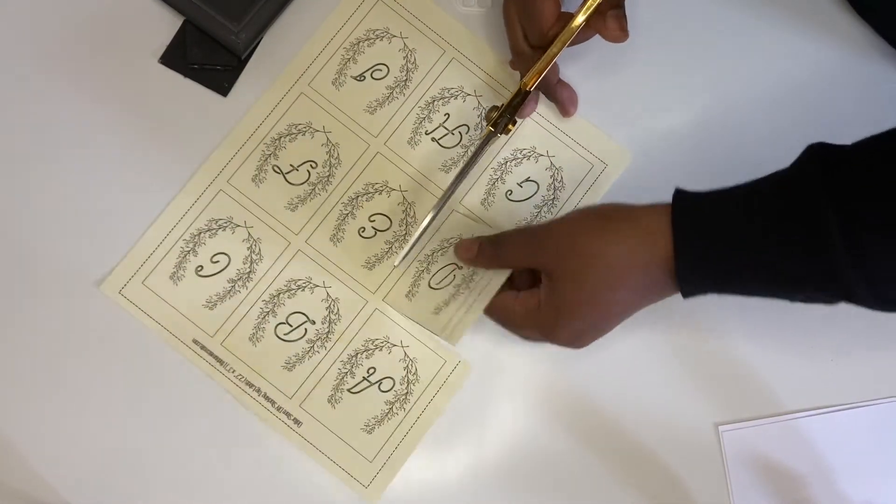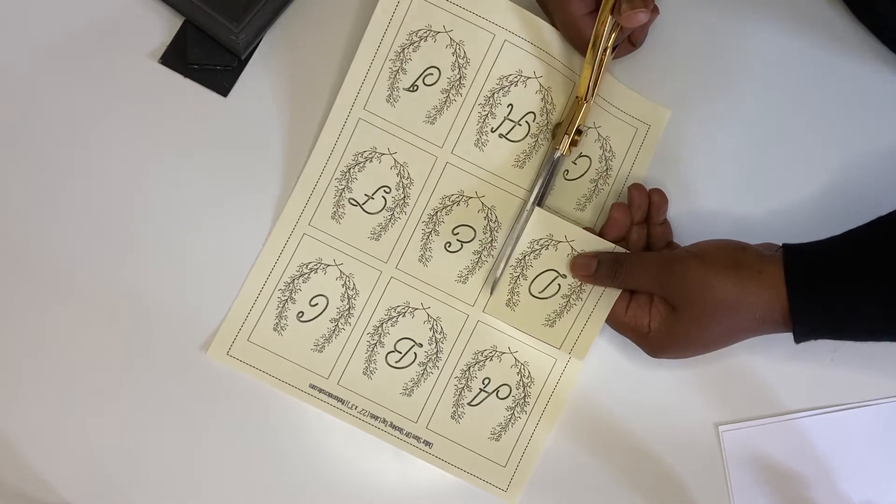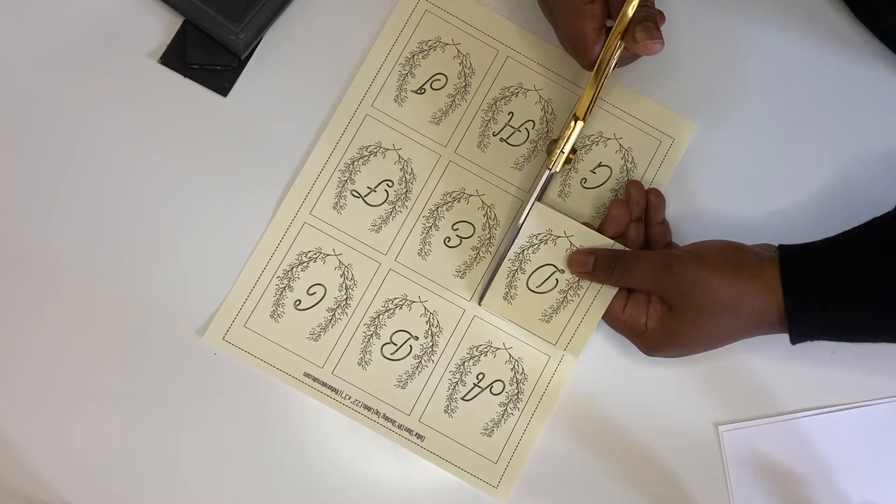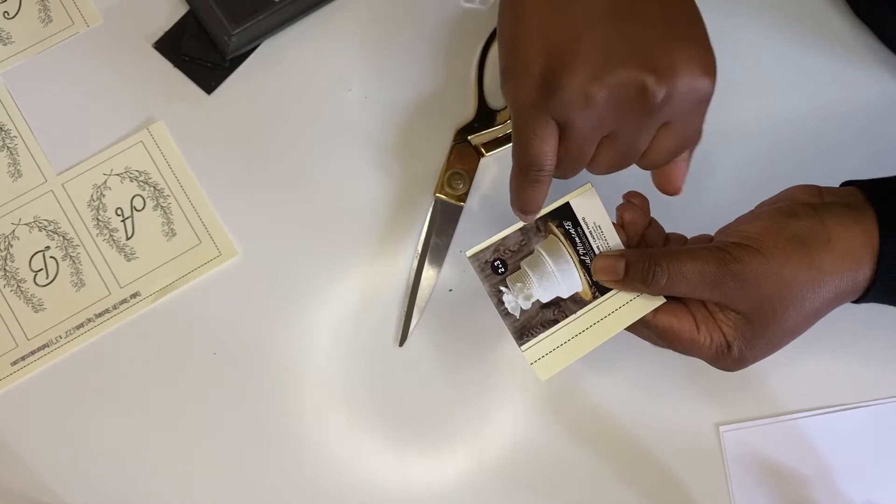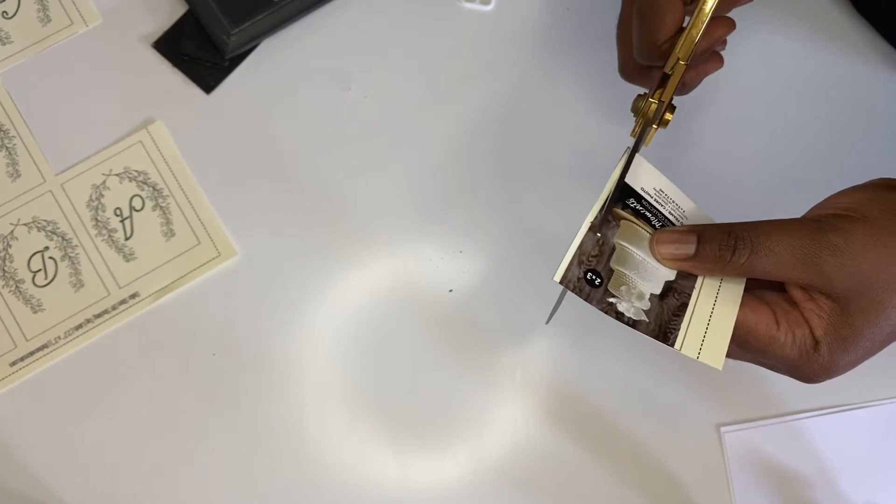So I just kind of line it up, making sure there's like a little bit of equal space on either side, and then I'm just gonna cut.